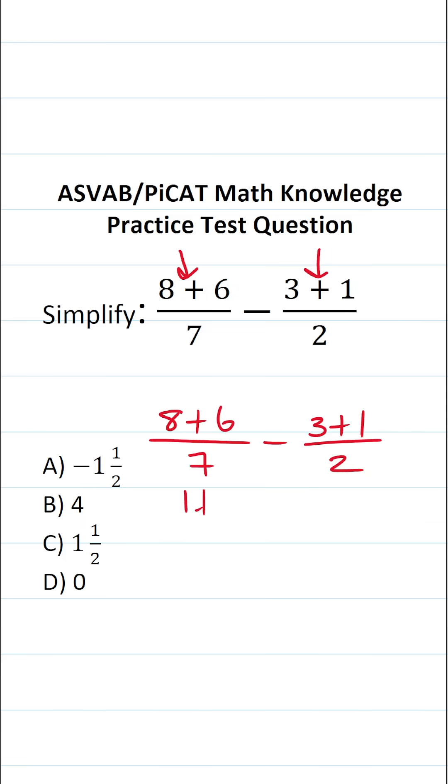8 plus 6 is 14, so this is 14 over 7 minus 3 plus 1 is 4 over 2.